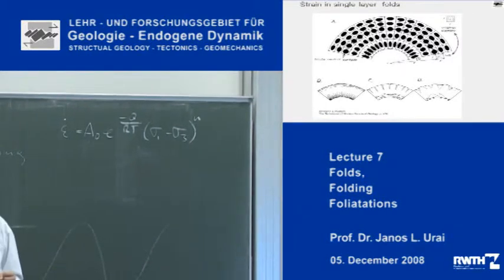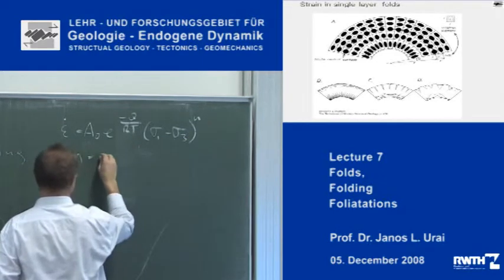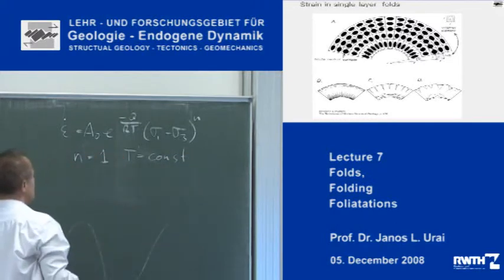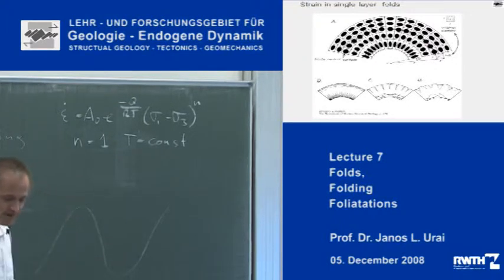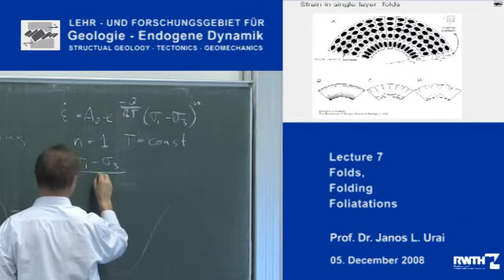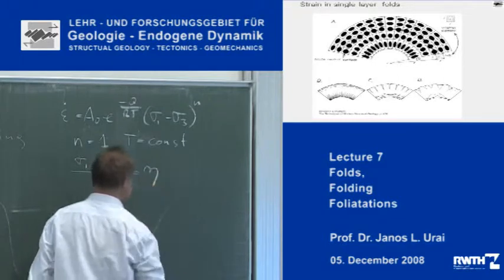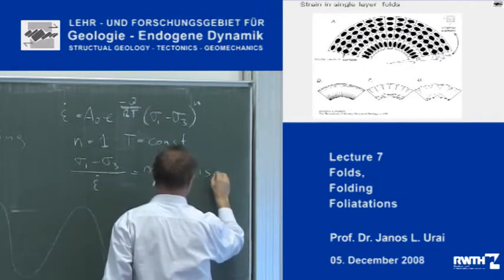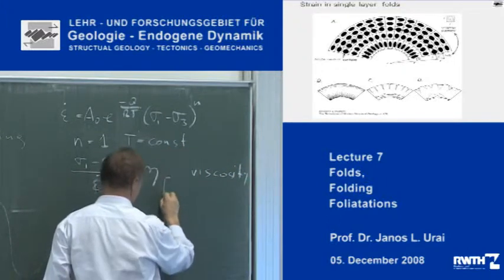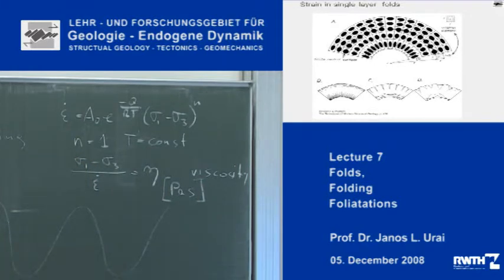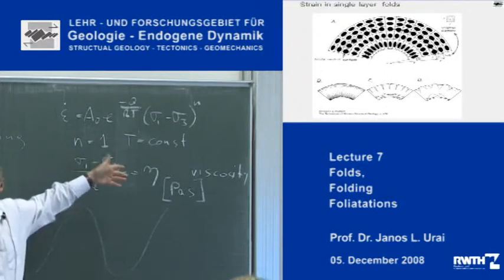Now let's try to make this equation a little simpler. We make n equals 1 and we keep the temperature constant. Then what I can write is: sigma 1 minus sigma 3 divided by the strain rate is a constant. And this number here is called viscosity. The units are of course Pascal times second — strain rate is 1 divided by second, so stress divided by strain rate is Pascal second.